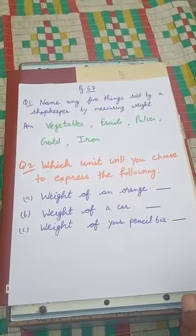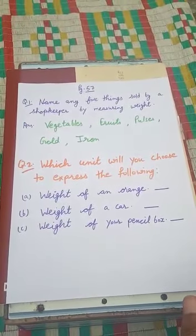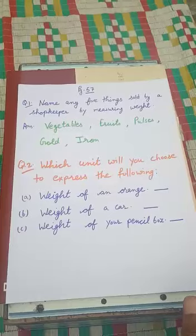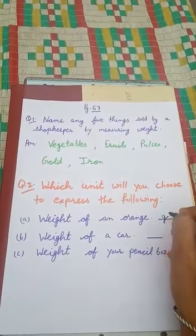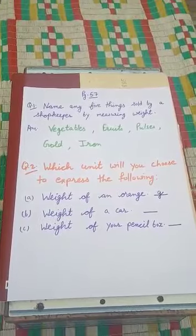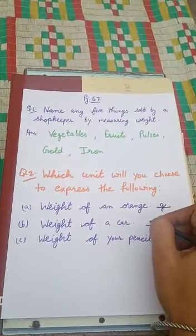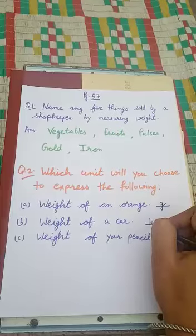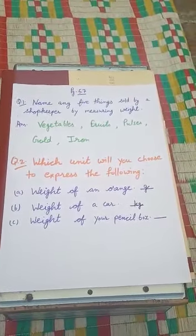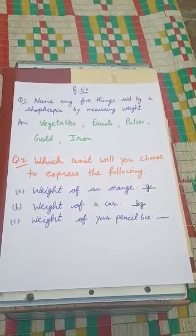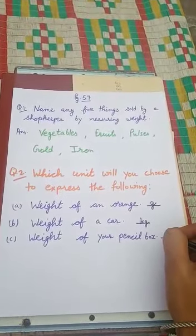Now, come to part A. Weight of an orange — weight of an orange will be measured in gram. Weight of a car — weight of a car is measured in kilogram. Weight of your pencil book — it is of lightweight, so we will measure it in gram.